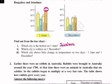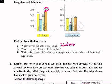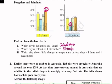Question number two: which city is coldest on 1st December? We can see that on 1st December, Shimla's temperature is the lowest. So the coldest city is Shimla.